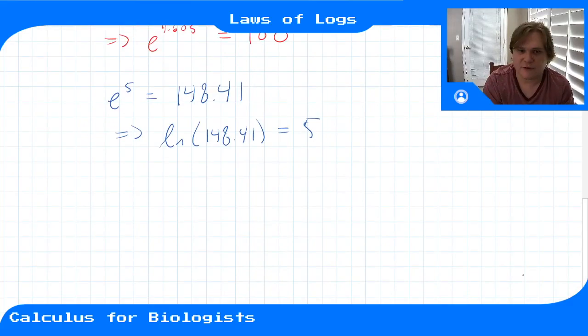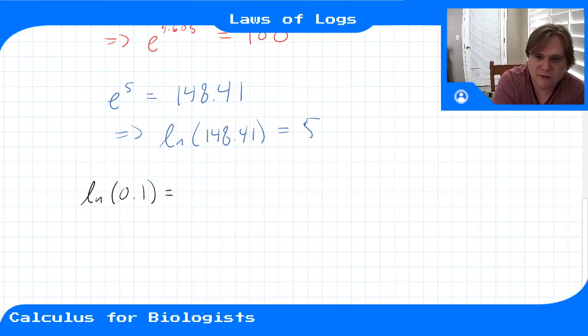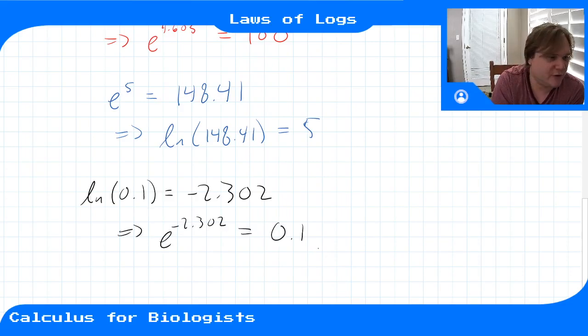We'll do maybe one or two more. If I start with ln(0.1), if I plug that into a calculator, I get -2.302. And what that means is that e^(-2.302) gives me the value 0.1.